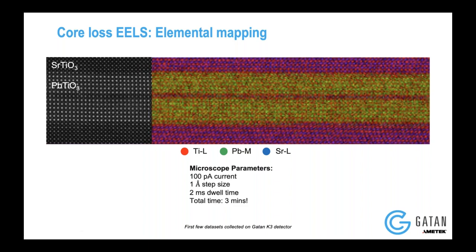You would be amazed that this huge dataset — I think the area was about 100 by 100 nanometers — was actually all collected in three minutes. That just tells you the power of the K3 detector in terms of basic elemental mapping, showing that you need a very small dwell time to capture these things and thereby damage your material less.